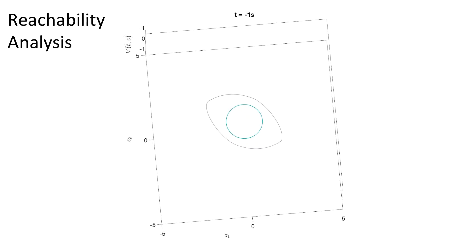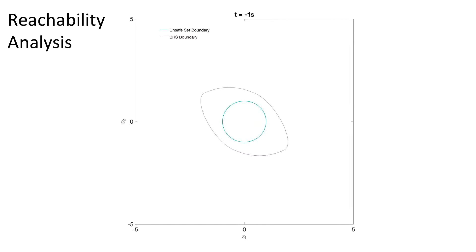The zero level set of the evolved value function represents the backward reachable set. Outside of the set, we can guarantee that the system stays safe within the time horizon.